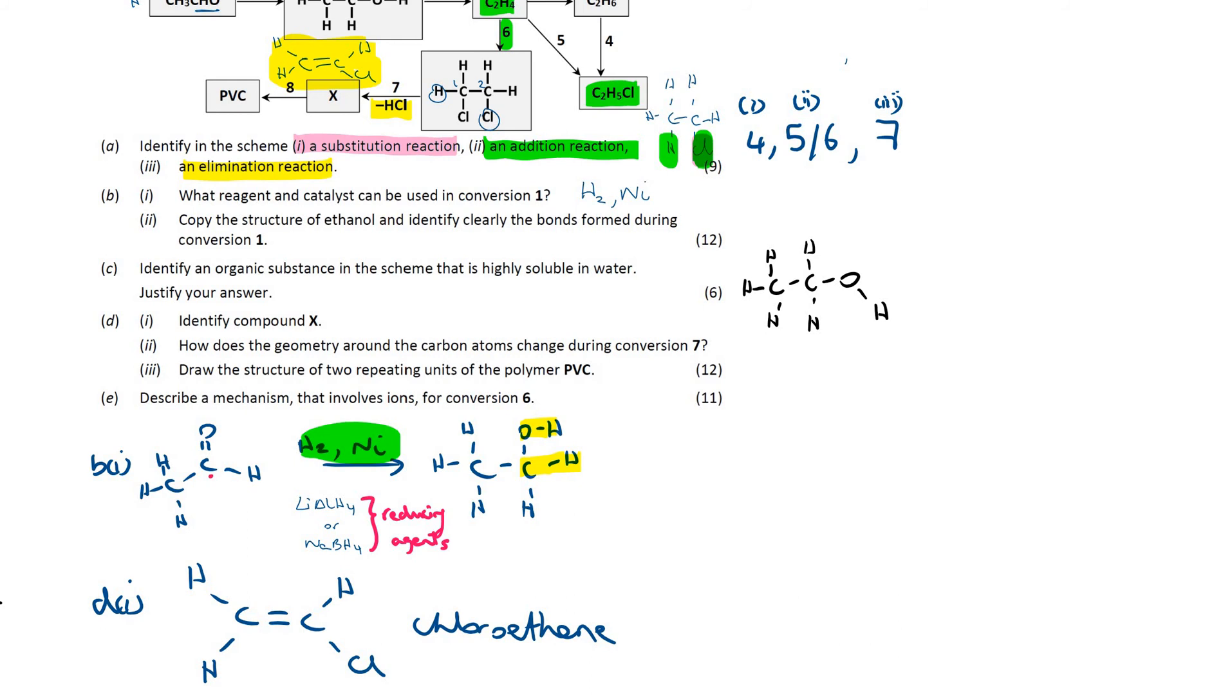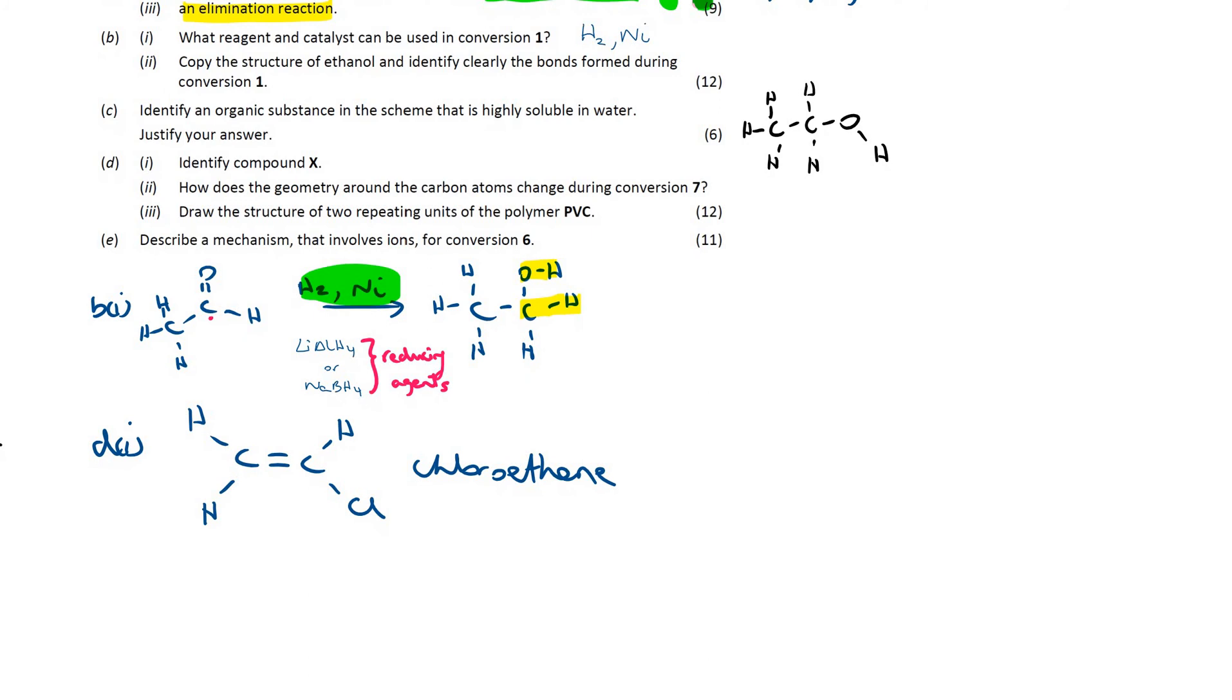How does the geometry around the carbon atom change during the conversion? From that conversion of that molecule to that molecule, well, you're going from a tetrahedral arrangements of the carbon atoms there, to a trigonal planar arrangement.